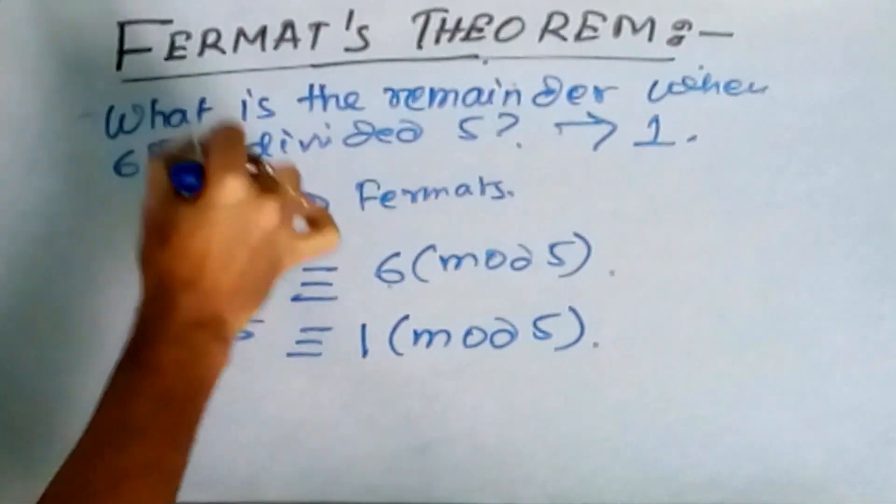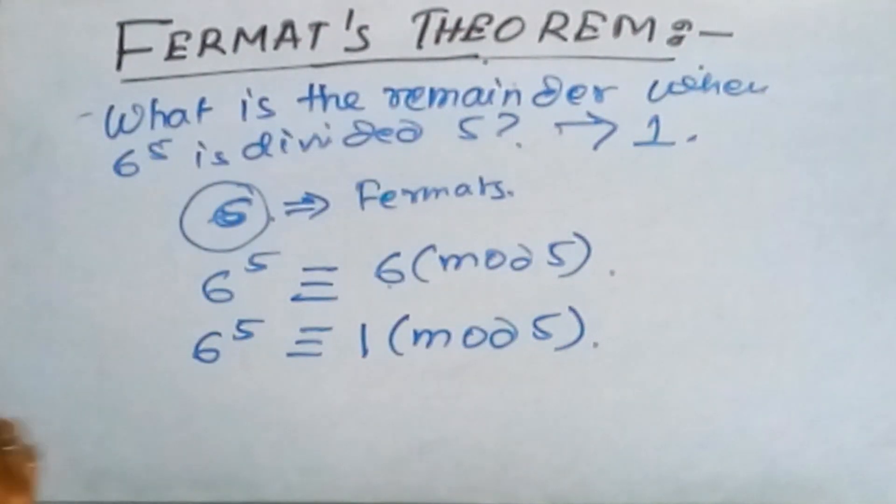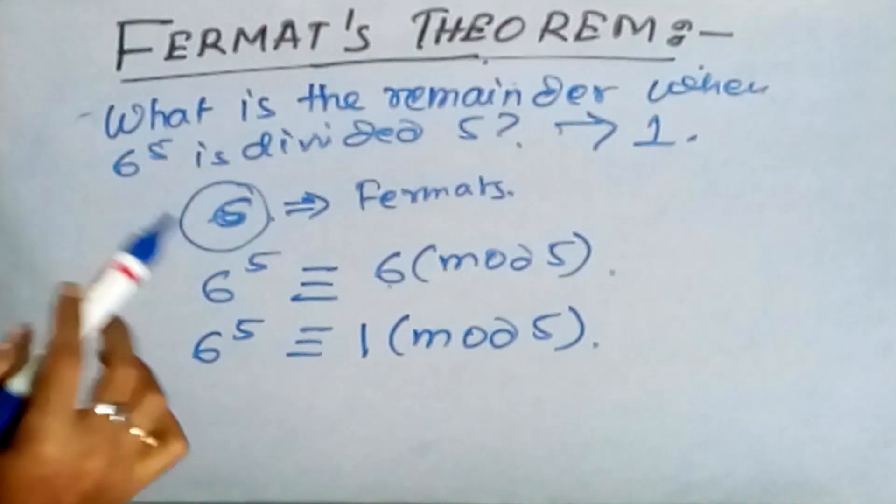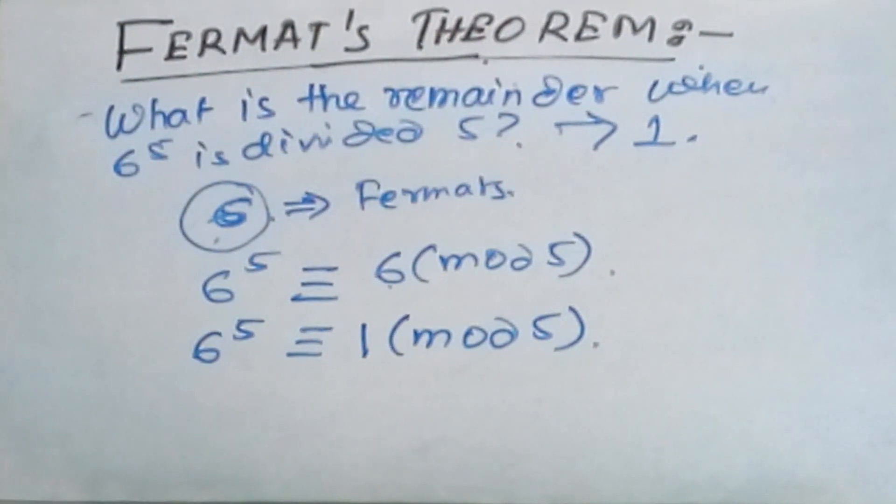When using Fermat's theorem you can say 6, but as 6 is greater than 5, so we again have to divide it and the actual remainder when we divide it with 5, then we will get 1. So this is 1.